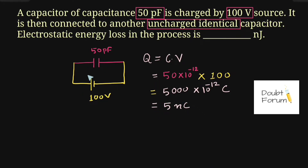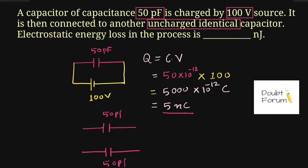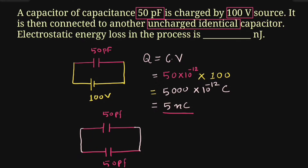Once this capacitor has stored this much charge, we are connecting this charged capacitor of 50 picofarad across an identical uncharged capacitor. Identical means its value would also be equal to 50 picofarad, but there is no charge stored in this second capacitor. Now we have to find out the electrostatic energy loss in this process.